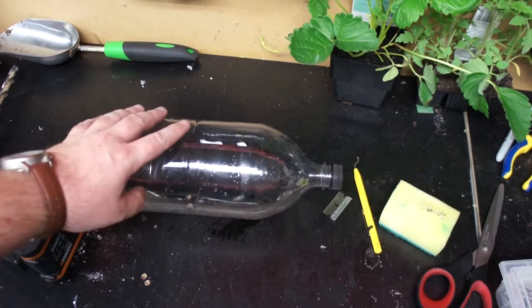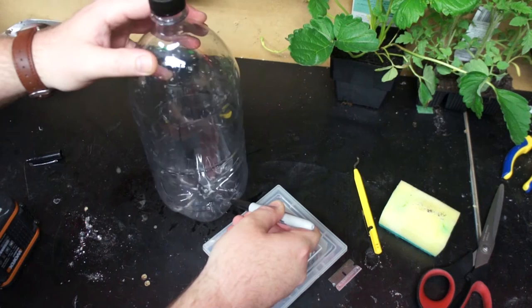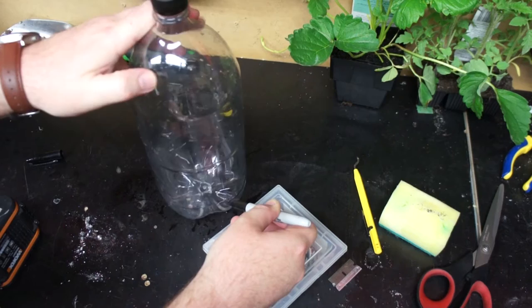For this project you're going to use an empty soda bottle that's been washed out. I prefer a two liter because it's a larger bottle. Using a marker, just draw a line all the way around the circumference, around two to two and a half inches up from the bottom of the soda bottle.